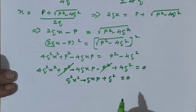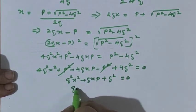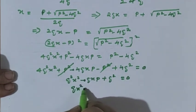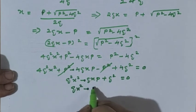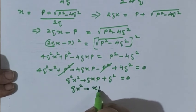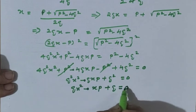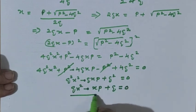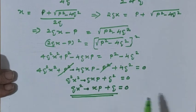Again, all the terms have q also. So cancelling one q: q x squared minus xp plus q equals 0. What we had to prove in the question was: show that qx squared minus px plus q equals 0.